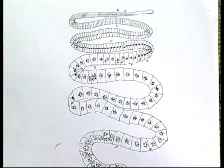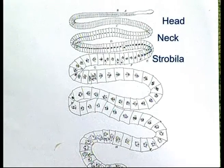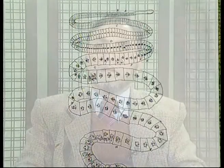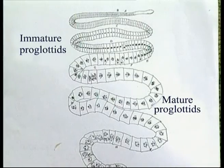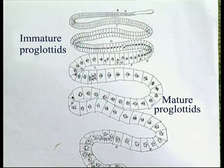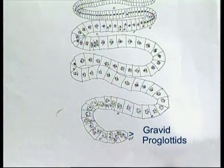For this Diphyllobothrium latum, which is a long cestode living in the intestines of man, it has the head region with the depressions, then the neck region, then the strobila. This strobila contains the immature proglottids, which have the primordia of the reproductive organs, then the mature proglottids, which have both the male as well as the female set of reproductive organs. There is a hermaphroditic setup in each proglottid of this animal. After this, we have the gravid proglottids. There are a large number of mature proglottids.